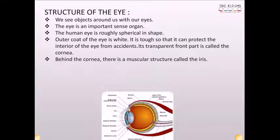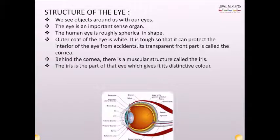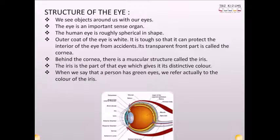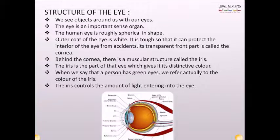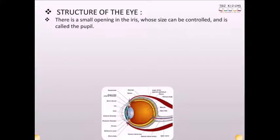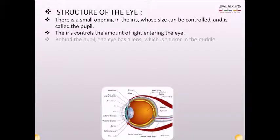Behind the cornea, there is a muscular structure called the iris. The iris is the part of the eye which gives it its distinctive color. When we say that a person has green eyes, we refer actually to the color of the iris. The iris controls the amount of light entering into the eye. There is a small opening in the iris whose size can be controlled and is called the pupil.